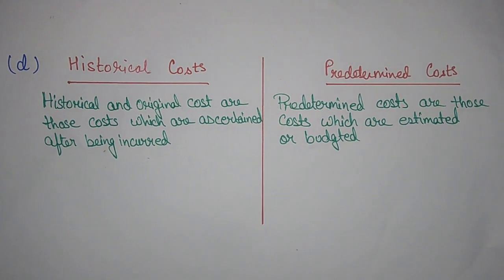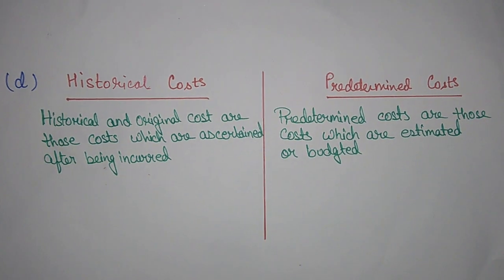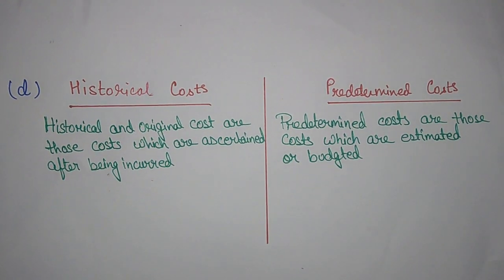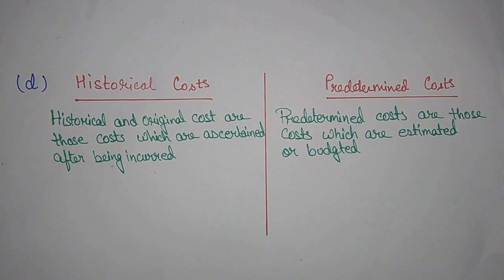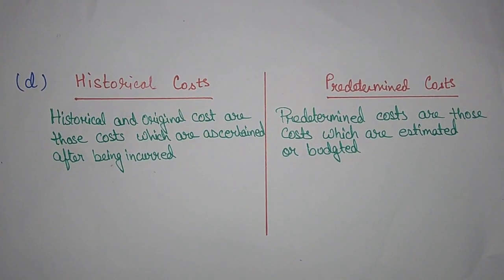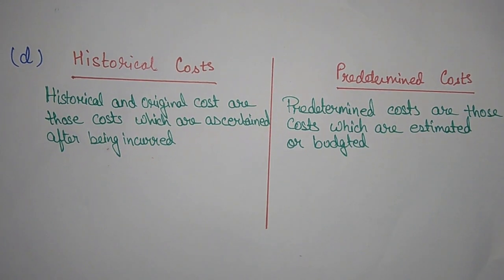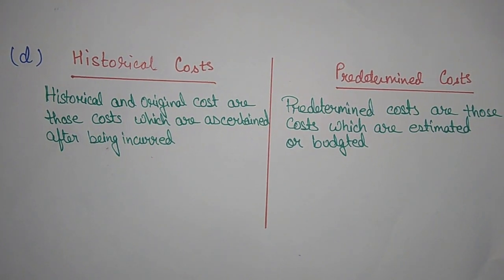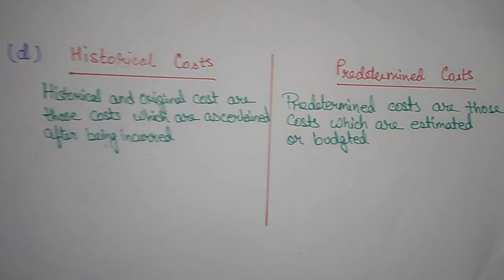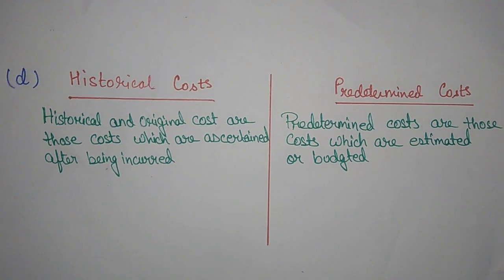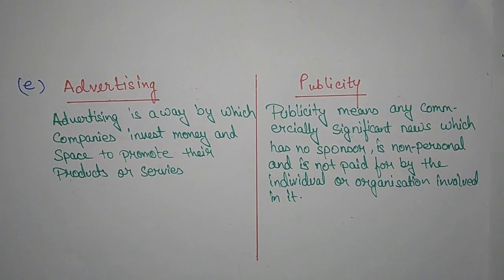Part D — Historical cost and predetermined cost. Historical costs are those costs which are ascertained after being incurred — basically costs the firm paid in the past but are still continuing in the present. Predetermined costs are those costs which are estimated or budgeted and will be incurred in the near future.